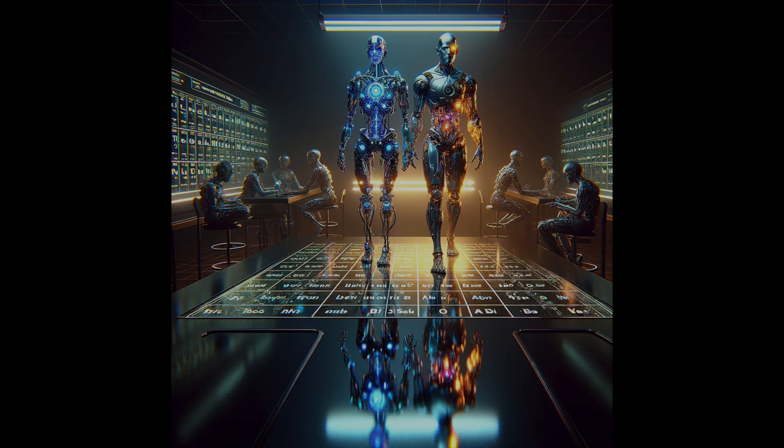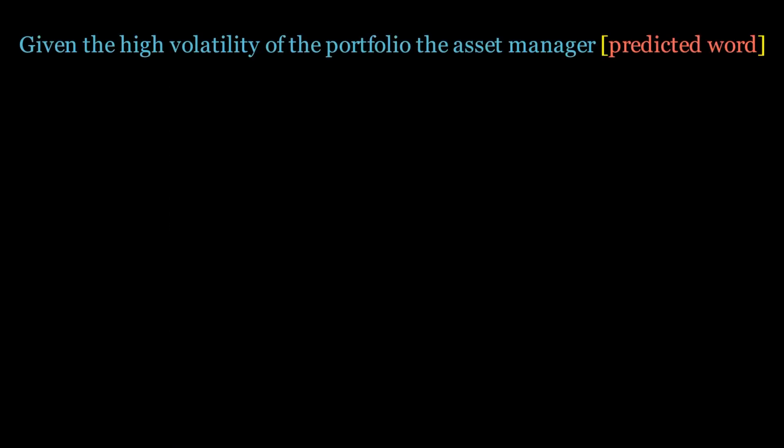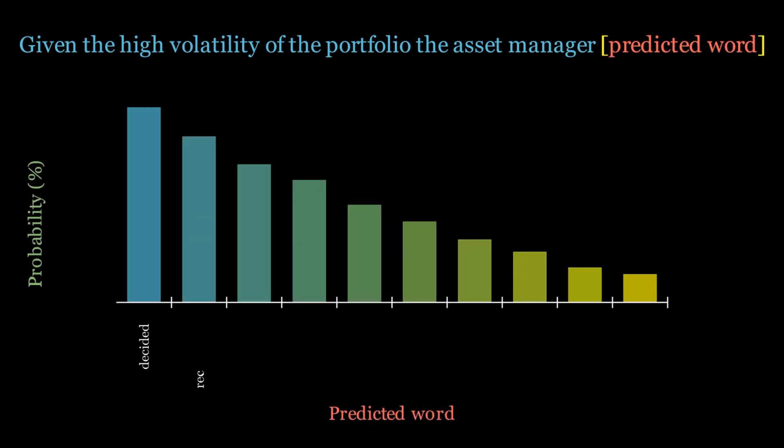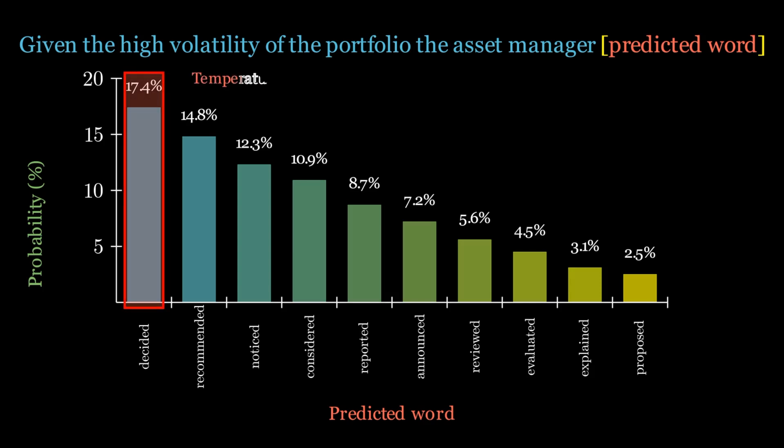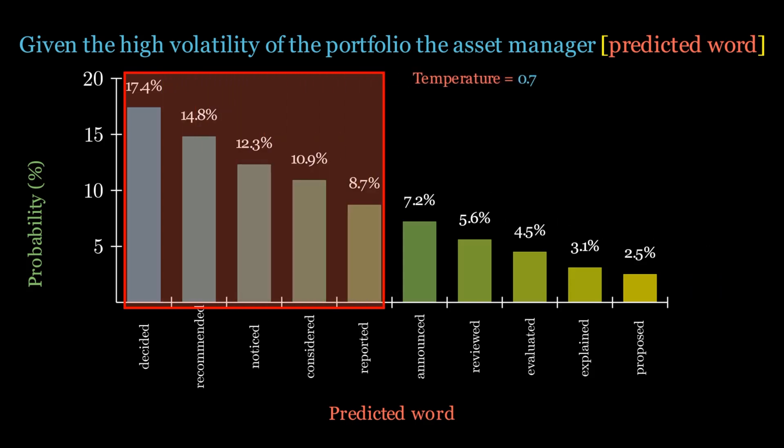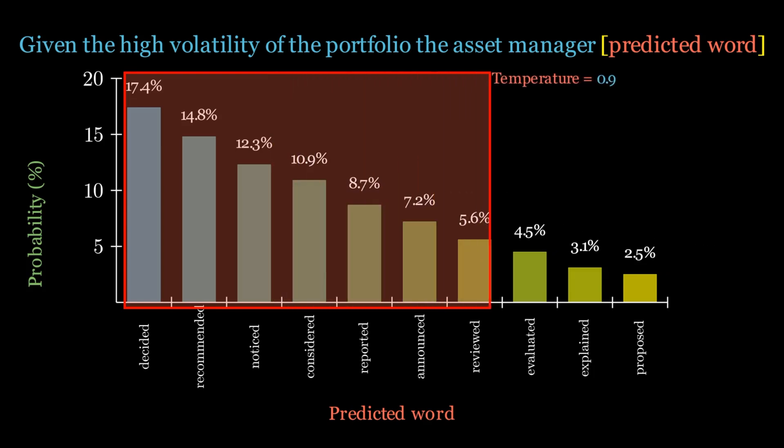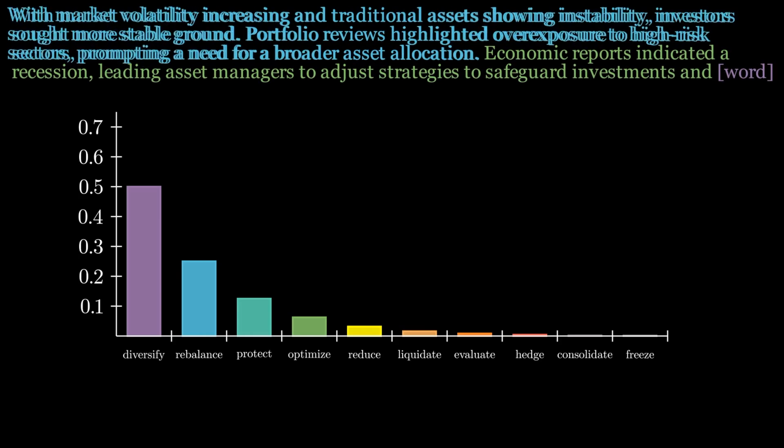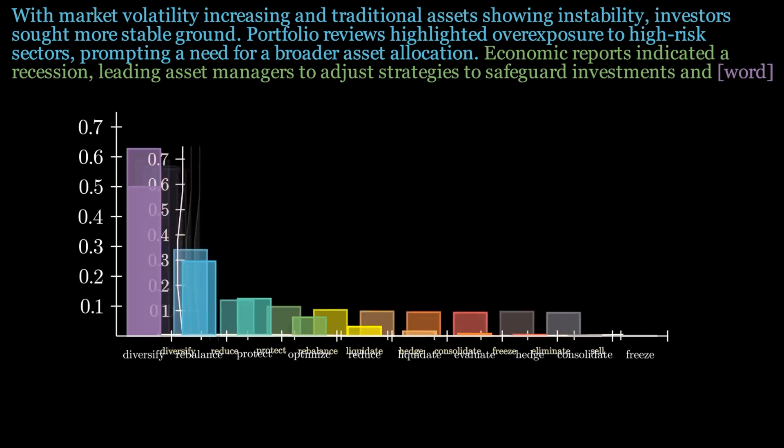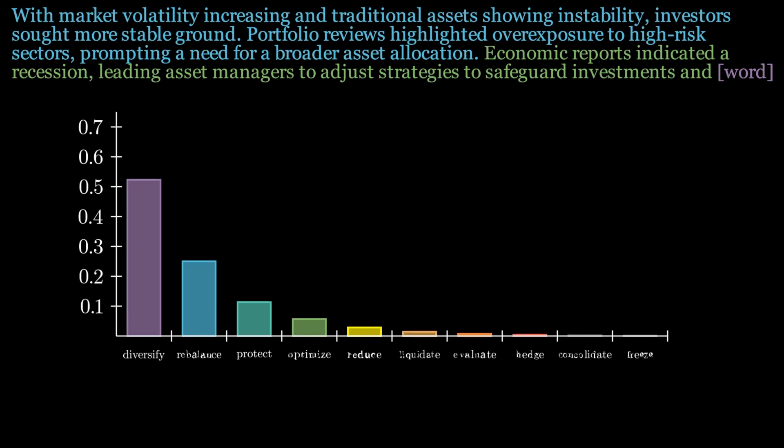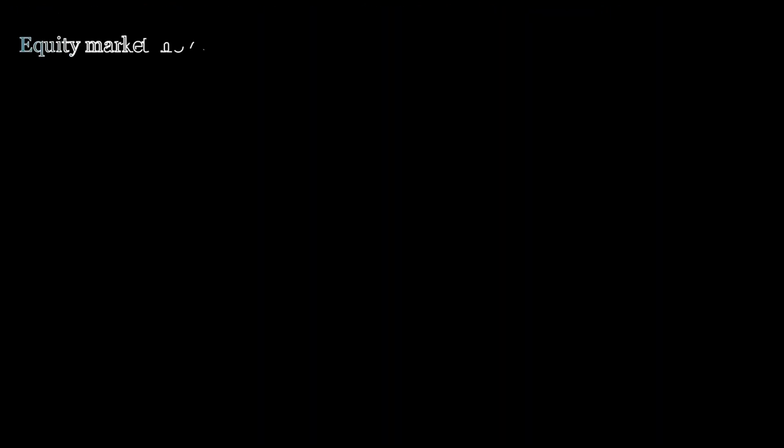All right, let's quickly recap what we've unpacked today in our journey through the fascinating world of prompt engineering. Understanding AI models: we started by exploring how AI models like ChatGPT and others make predictions based on probability distributions, a key concept in determining their responses. The power of context: we then delved into how the context or input we provide influences these predictions, emphasizing the critical role of crafting precise prompts. Tokenization: